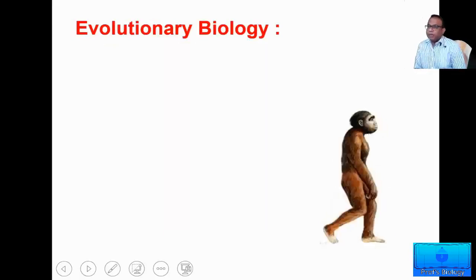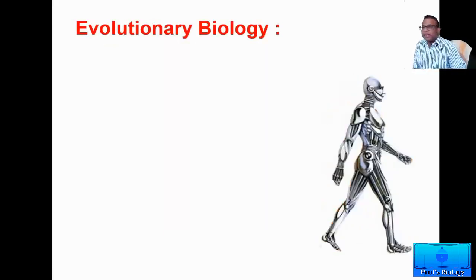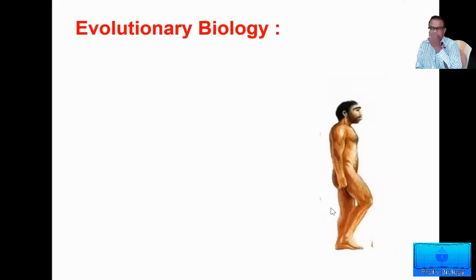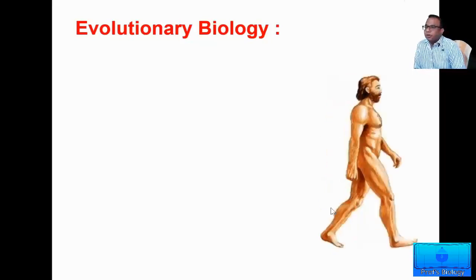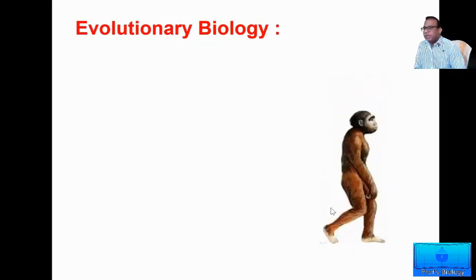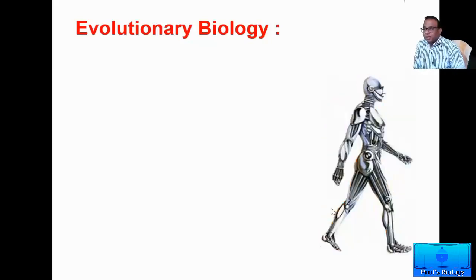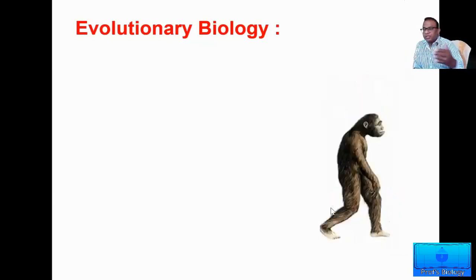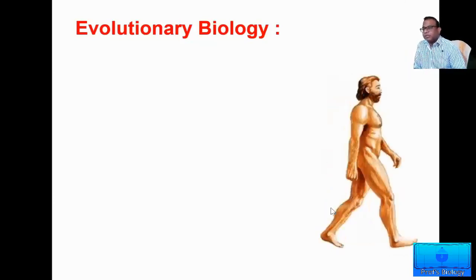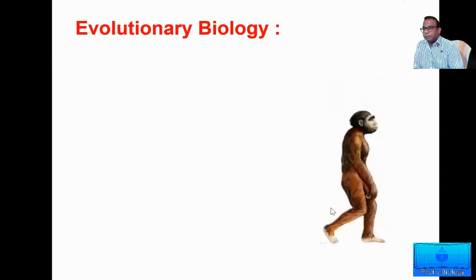For example, if you take human beings, we all know that humans have evolved from their great, great ancestral chimpanzees or monkeys. Over a period of time, human beings have gone through various stages and then finally they have become what they are today — the modern man. Study of such different stages of how an organism evolves over a period of time is what is called evolution or evolutionary biology.